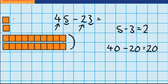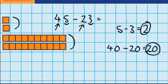So we've subtracted our ones, which left us with 2. We've subtracted our tens, and that left us with 2 tens, or 20. So now we just need to put the two amounts together: 20 and 2, or 20 plus 2, is 22.